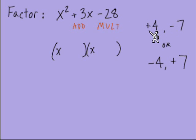Is it going to be a positive 4 with a negative 7, or is it going to be a negative 4 with a positive 7? So we have to think about what's the pair that's going to add up to equal a positive 3?